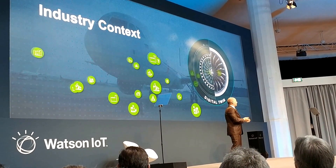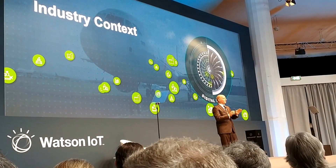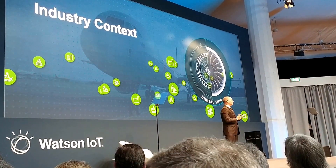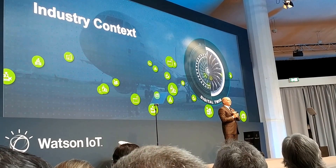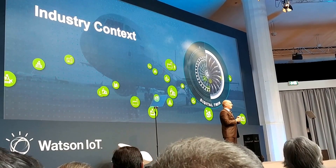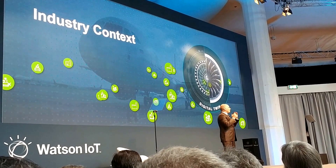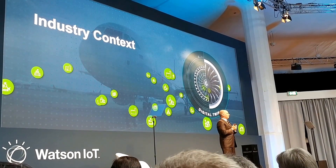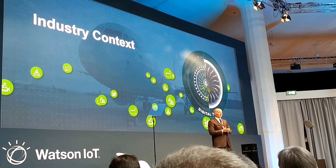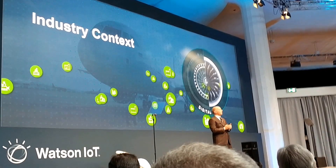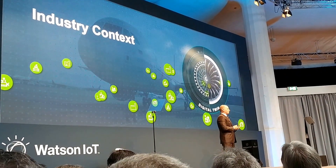You're also going to apply industry context. You may use the same product differently in two different industries and have two different digital twins for that one product based on how the industry uses it. Whether it's a pump used in oil and gas or one used in municipal water and wellness, the outcome is based on the industry context. A digital twin not only captures the engineering aspects, but also the industry context and the dynamics of how that product is used.